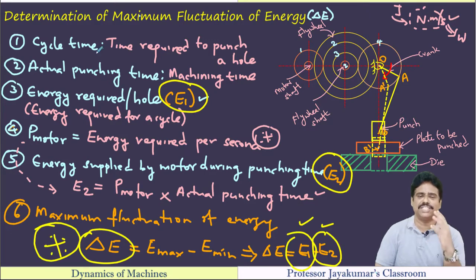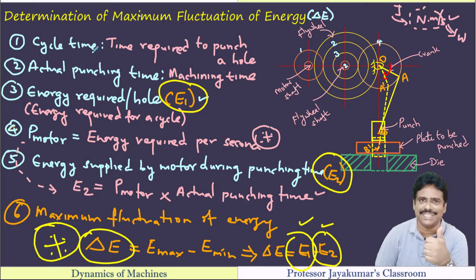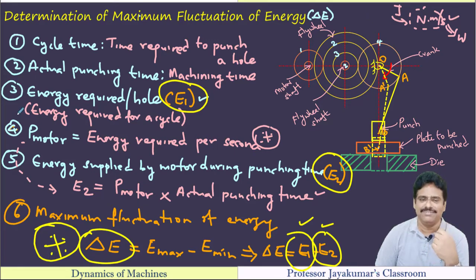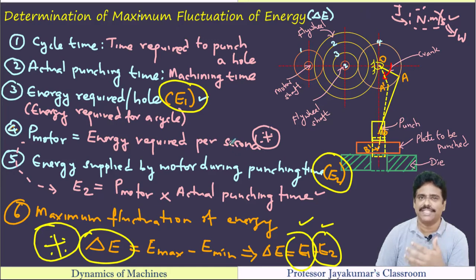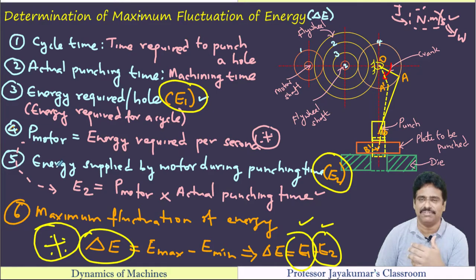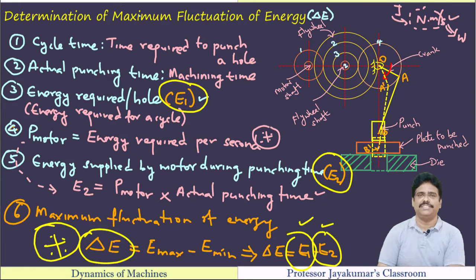So what are the six steps? First, find cycle time; second, find actual punching time; third, find energy required per hole or energy required for an entire cycle. Then find the power rating of the motor by determining energy required per second. Then find energy supplied by the motor during punching time, E2. Once we know E1 and E2, we can find maximum fluctuation of energy, delta E.